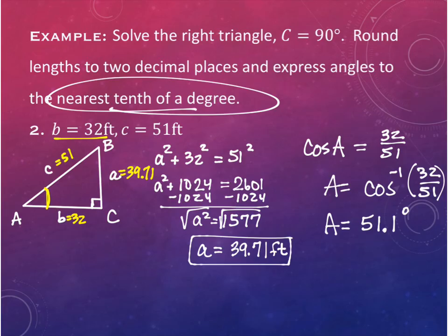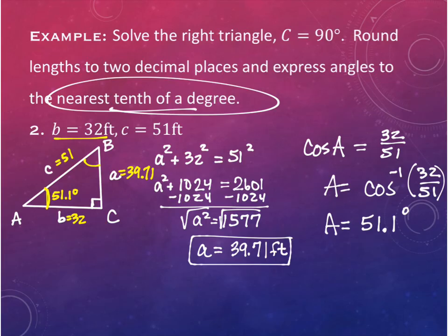Now knowing angle A is 51.1 degrees, how do we find angle B? We subtract from 90. The two acute angles must add up to 90, since the triangle has 180 degrees total and the right angle accounts for 90. So angle A plus angle B equals 90.